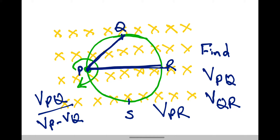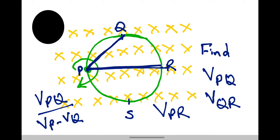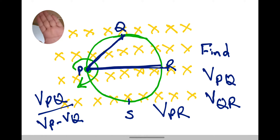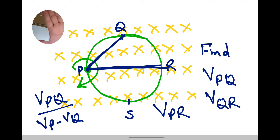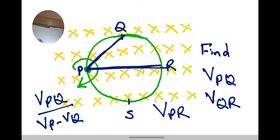Let's check the higher potential. The velocity vector V and the direction PQ — because the magnetic field is directed in this way, PQ is at higher potential. Similarly, PR is also at higher potential.